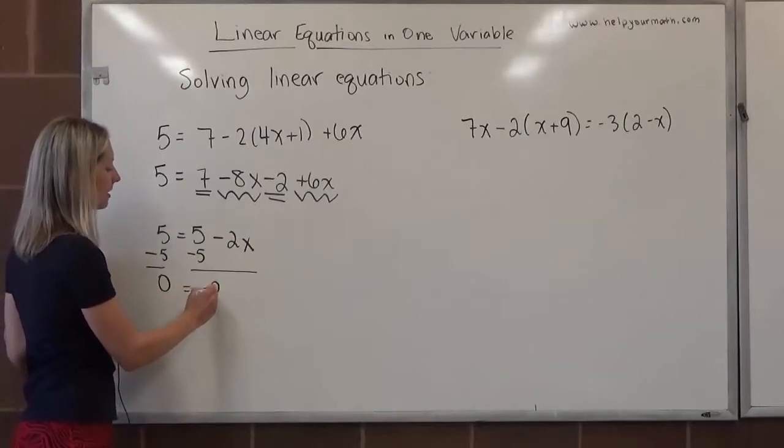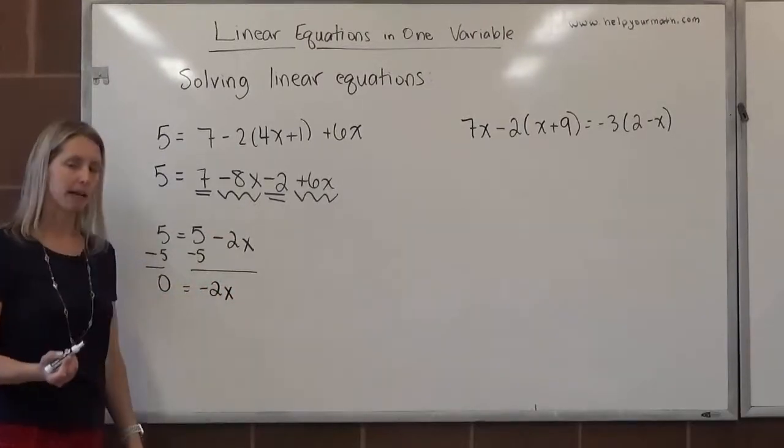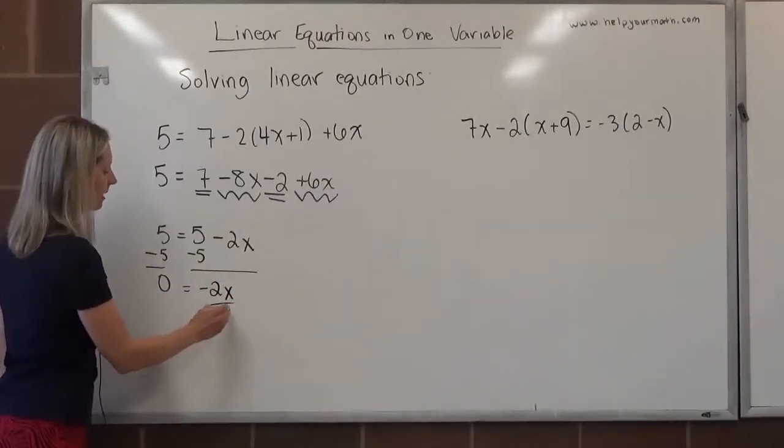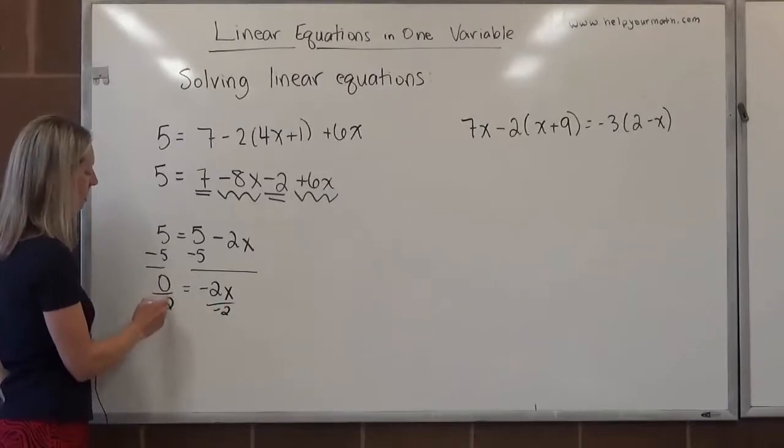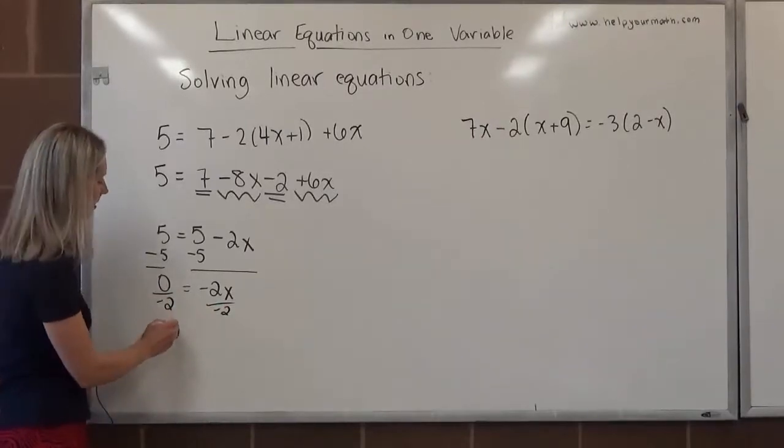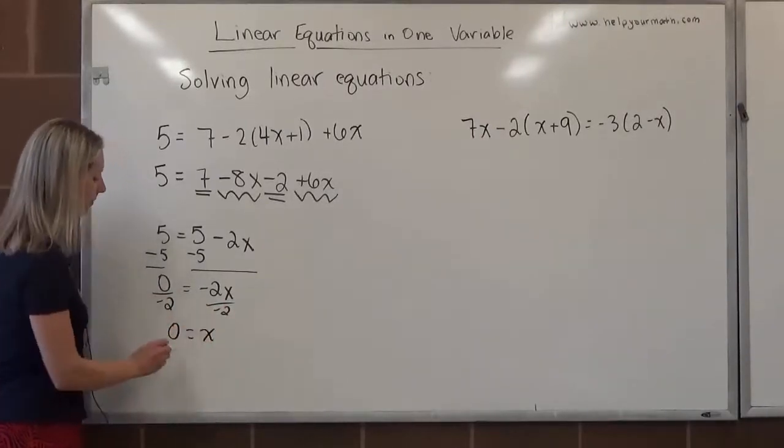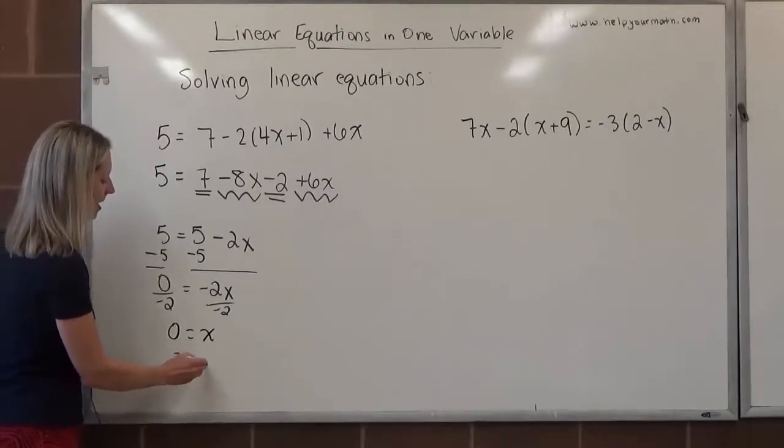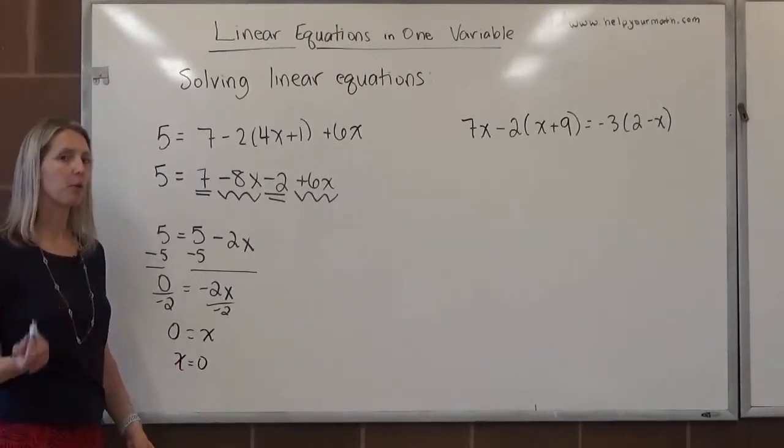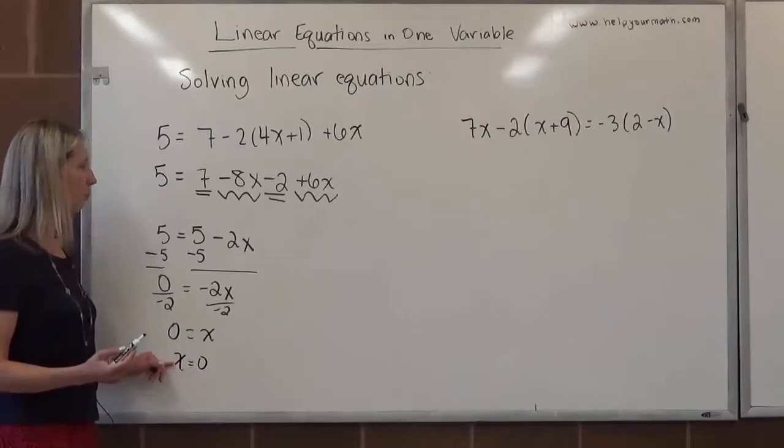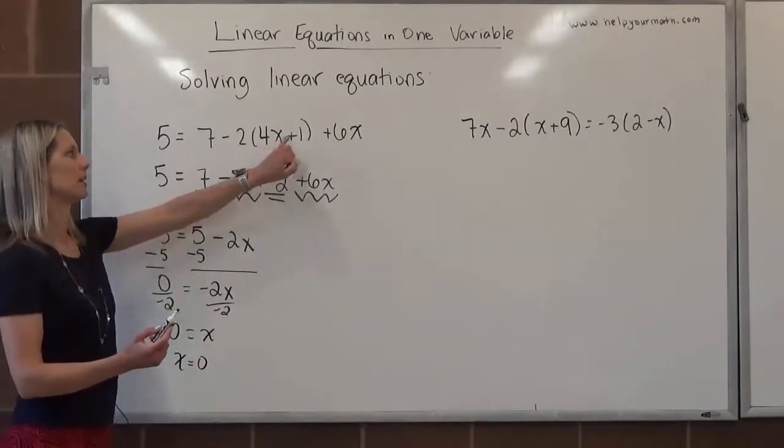Over here, we're left with negative 2x. To get x by itself, we would divide both sides by negative 2. 0 divided by negative 2 would be 0, so we get 0 equals x. If you want to flip it around, you can say x equals 0. 0 is a real number. The one solution that would work here is plugging in 0 for x.